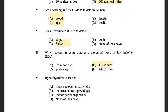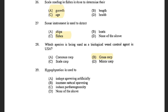Next question: Hypophysiation is used to — options are induced spawning artificially, increase natural spawning, induce parthenogenesis, and none of the above. The answer is induced spawning artificially. Hypophysiation is the process involving injection of pituitary gland extracts which induces breeding in fish artificially.